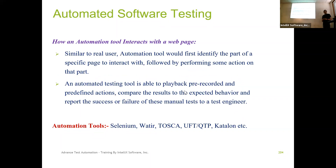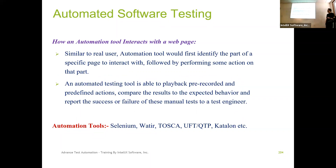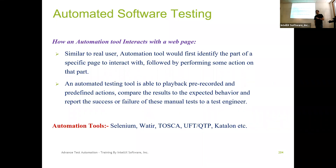Automation works the same way. Its job is to simulate the real user. When you're using the automation tool, you have to instruct the tool to identify what elements you want to interact with. You instruct the tool to input data, click on things, and then identify pass or fail — compare expected versus actual.